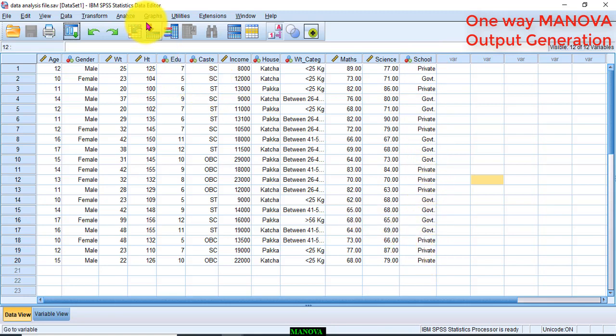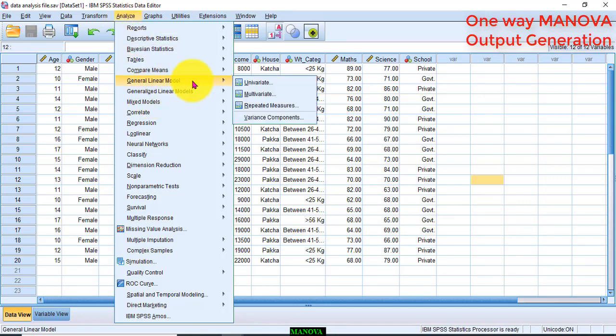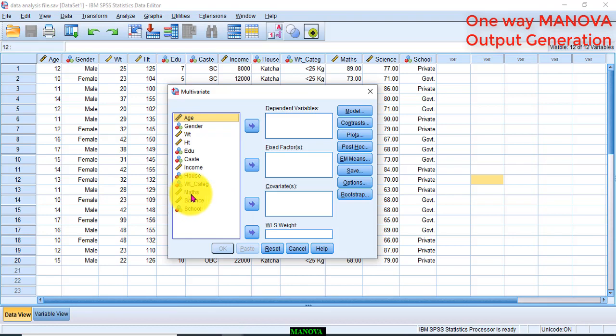To perform one-way MANOVA, go to Analyze, click General Linear Model, Multivariate. And now transfer these dependent variables, maths and science, to the dependent variable box. And the type of school as fixed factor.